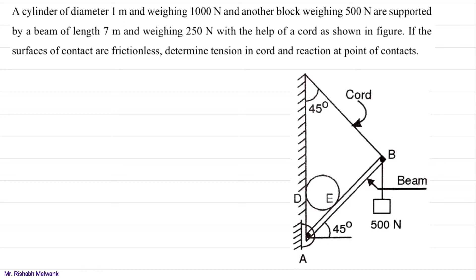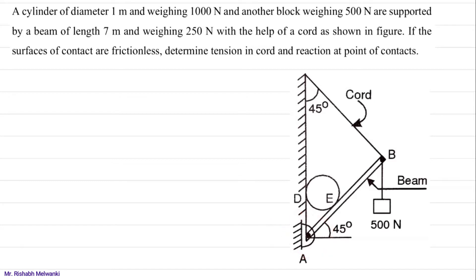The contact points are D and E. We have to find the reaction at points of contact D and E. Now, how to draw the FBD? At point A, we have hinge support, so here we will get two reactions. I will draw the FBD now.